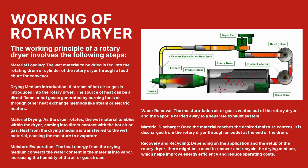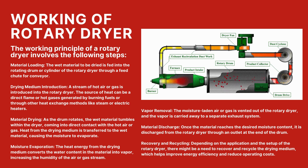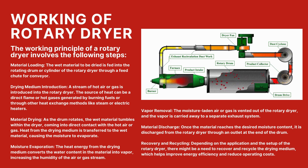This is followed by drying medium introduction, where hot air or gas is introduced into the rotary dryer. The stream of hot air or gas can be heated directly through a flame generated by burning of fuel, or by employing other heat exchange methods like steam or dielectric heaters. Then comes material drying: the wet material fed to the drum tumbles within the dryer and comes in direct contact with the hot air or gas, and heat is transferred to the wet material, causing moisture to evaporate.